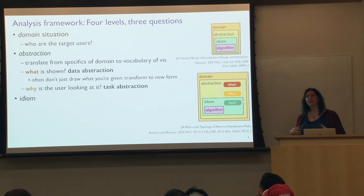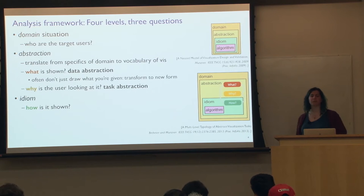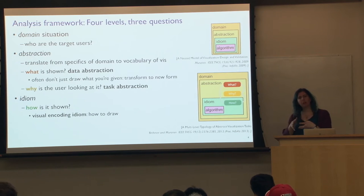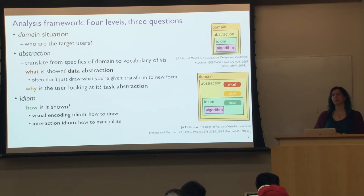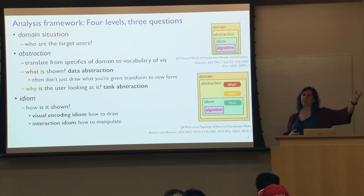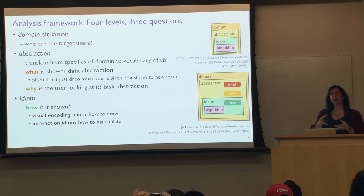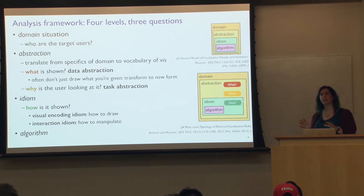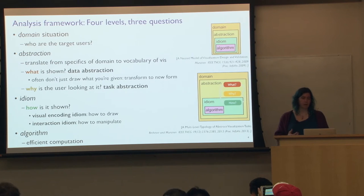Then there's the idiom level — typically called techniques or methods — answering the central question of how it's being shown. This splits into the visual encoding idiom (how you draw that picture) and the interaction idiom (how you interactively manipulate it). Some idioms are all about static visual encoding and others about dynamic interaction, though many techniques are intrinsically about both. And then finally, there's the algorithm level, where we instantiate this with efficient computation in an automatic context.